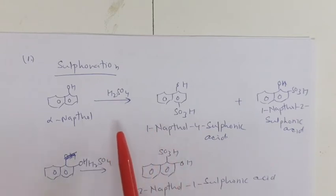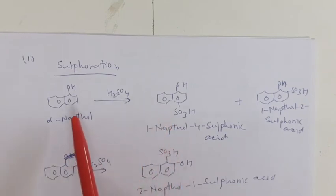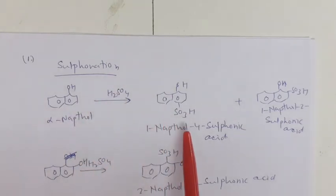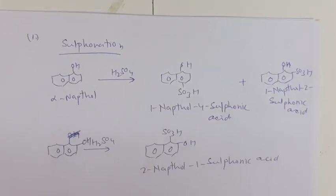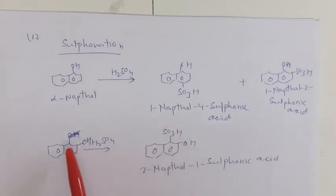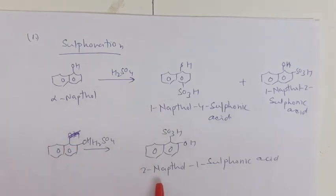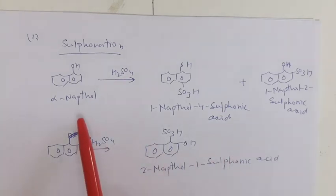For beta naphthol sulfonation, SO₃ as the electrophile attacks at the one position, that is the ortho position, and we get 2-naphthol-1-sulfonic acid. With coupling reactions: alpha or beta naphthol reacts with benzene diazonium chloride in the presence of NaOH at low temperature (0 to 10 degree centigrade), the Cl is removed and we get a dye compound. If beta naphthol reacts with benzene diazonium chloride in the presence of NaOH at 0 to 5 degree centigrade, it gives 1-phenylazo-beta-naphthol. So with diazonium chloride, naphthol undergoes coupling reaction and gives a dye.